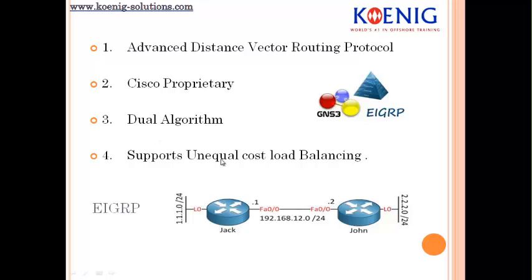EIGRP also supports unequal cost load balancing. Other routing protocols can only support equal cost load balancing, where a router uses both paths simultaneously. But with EIGRP, if you have links with different bandwidths, you can configure unequal cost load balancing — for example, sending two packets on a higher-bandwidth link and one packet on a lower-bandwidth link. EIGRP is the only routing protocol in the world that supports unequal cost load balancing.